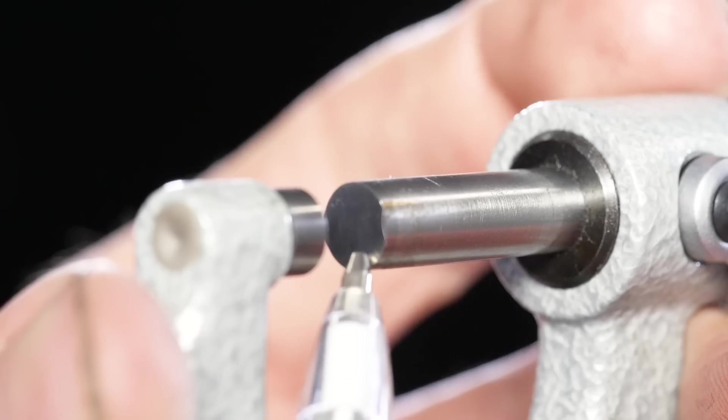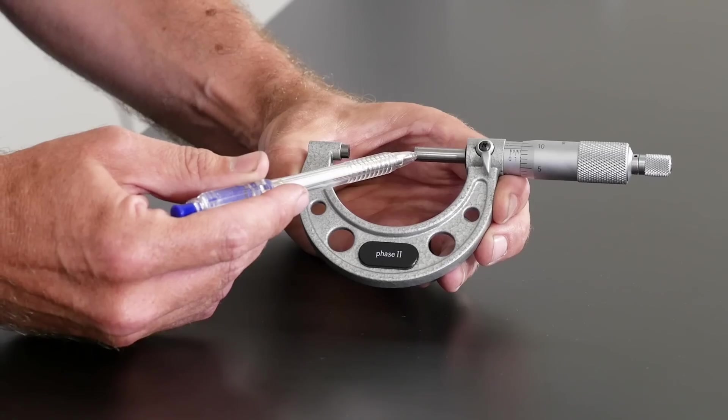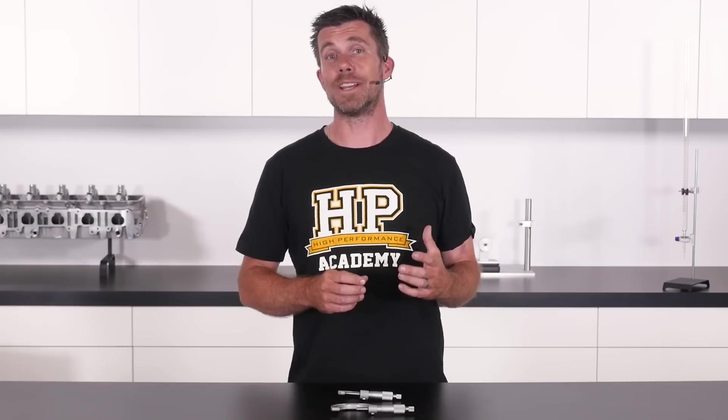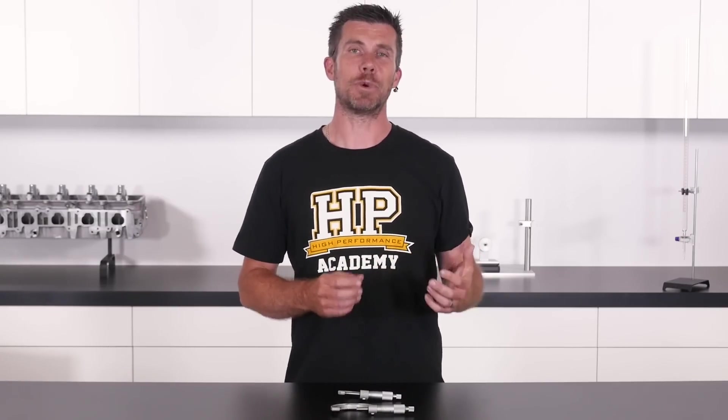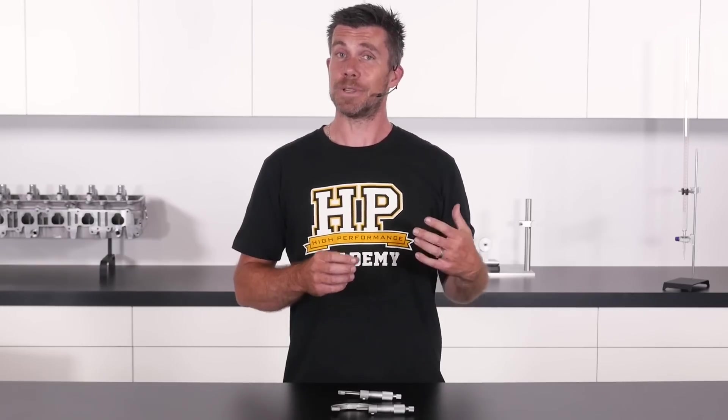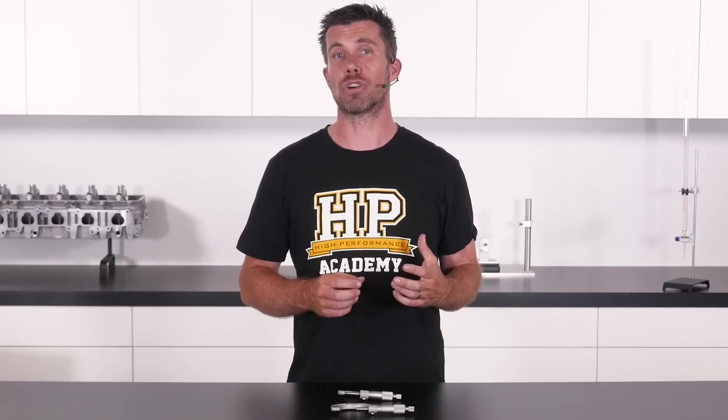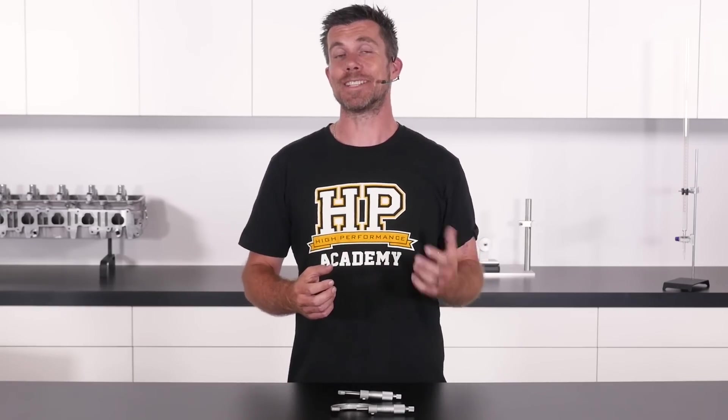Here's just one of the specialist tools you'll learn about in the Engine Building Fundamentals course. When it comes to building engines, the micrometer is one of the most common pieces of precision measuring equipment we're going to be using. I know that a lot of novice engine builders and mechanics really struggle with how to correctly use and read a micrometer, so in this module we're going to see exactly how to go about doing it.